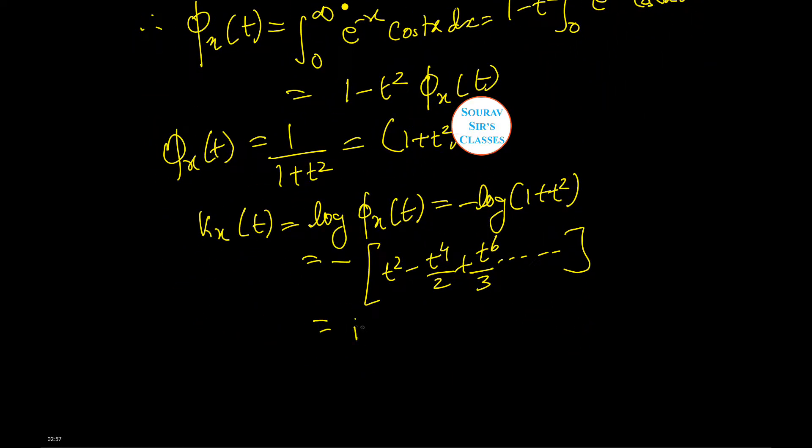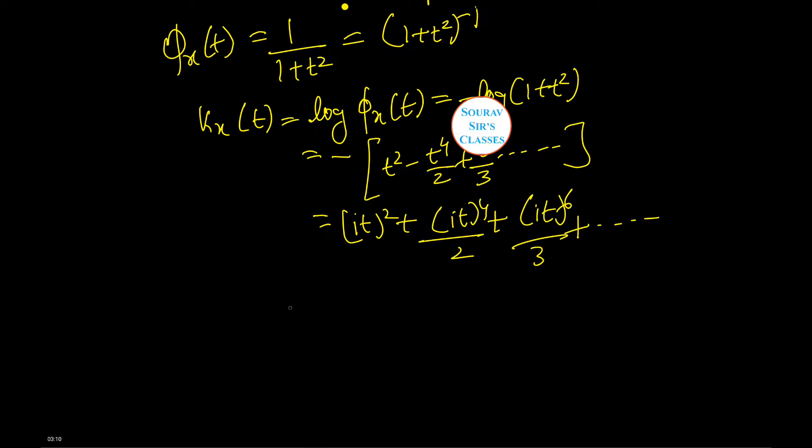This equals to it² plus it^4/2 plus it^6/3 plus dot dot dot. Hence, k₁ is equal to k₃ equals zero, and mean equals to k₁ equals zero. μ₃ is equal to k₃ equals zero.